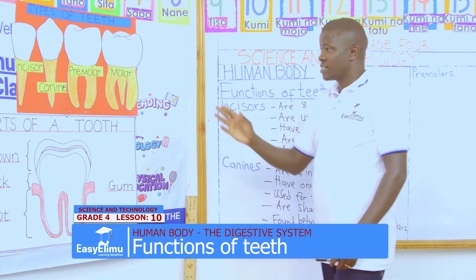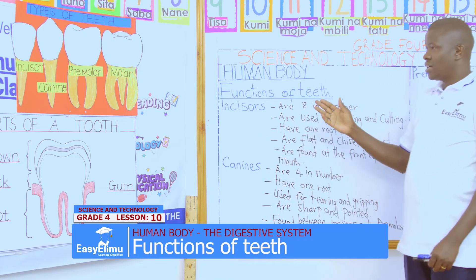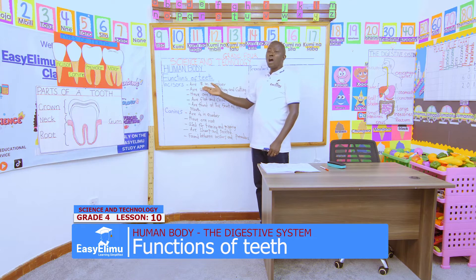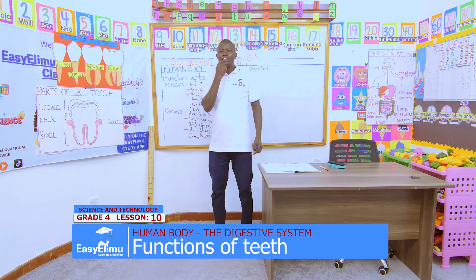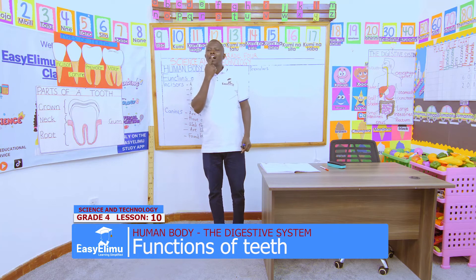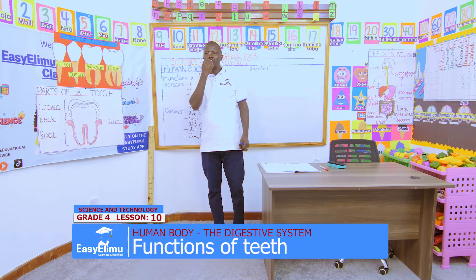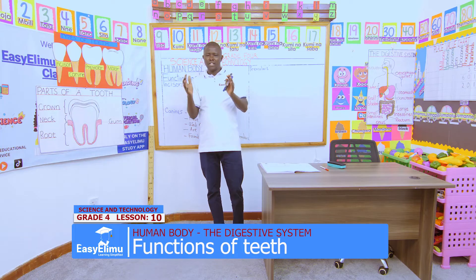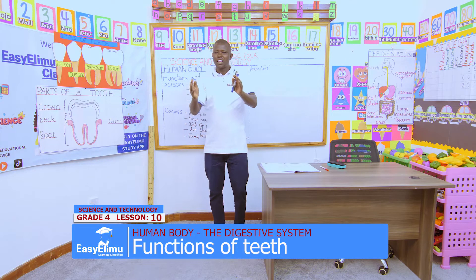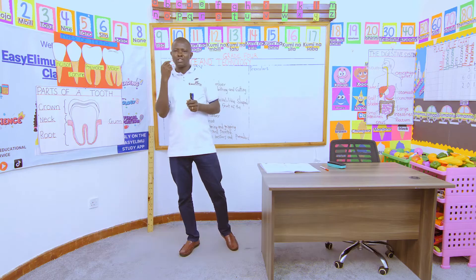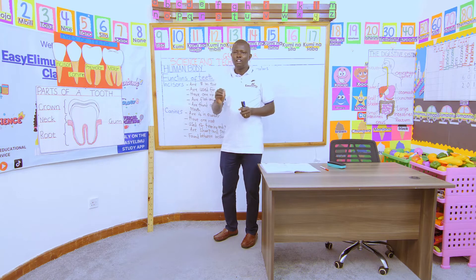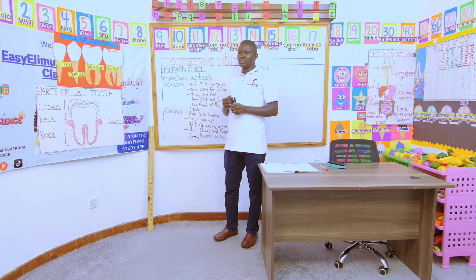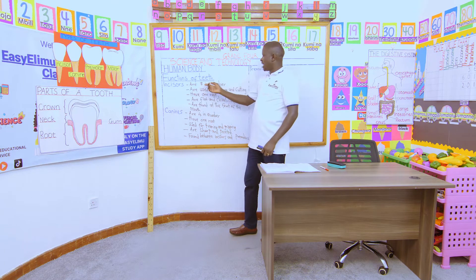When we look at the incisors, they are among our teeth. We have eight incisors — four at the front on the lower gum and four on the upper gum to make eight. In our groups, can you identify the number of incisors you can see in your friend? They are four at the lower and four on top, so all of them are eight in number.